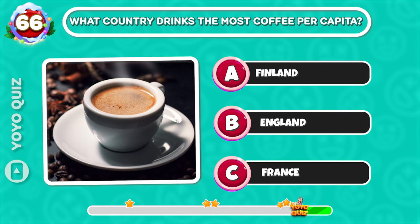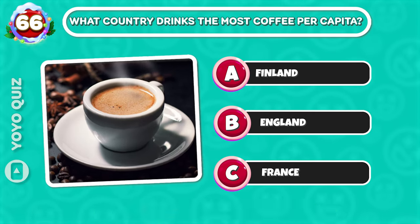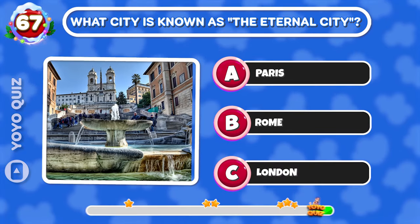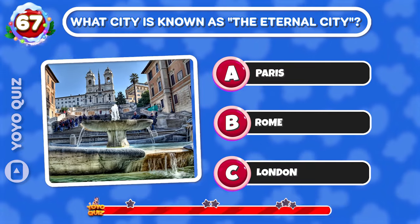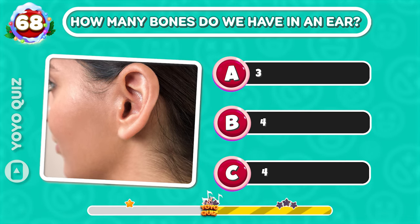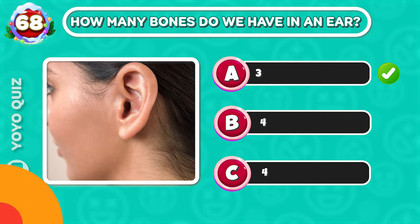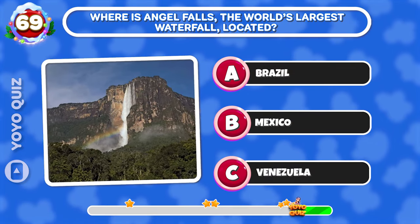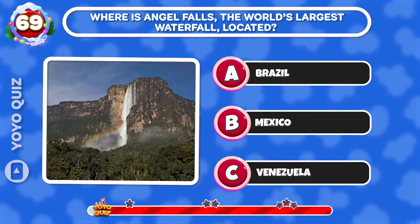Round 64: What country drinks the most coffee per capita? Round 65: Which city is known as the eternal city? Easy, it's B. Round 66: How many bones do we have in an ear? A is the correct answer. Round 67: Where is Angel Falls, the world's largest waterfall, located? It's C.